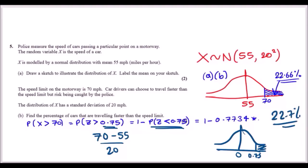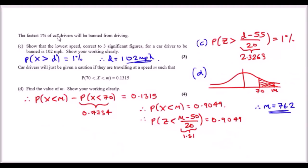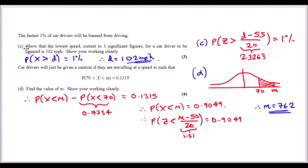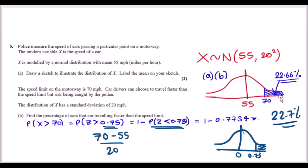Part c: the fastest 1% of cars will be banned. This corresponds to the extreme upper tail of the distribution. Call the threshold d; then P(X > d) = 0.01. Convert to z-form: (d - 55)/20 must correspond to the top 1% of the distribution.